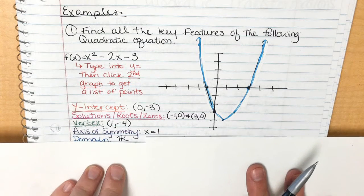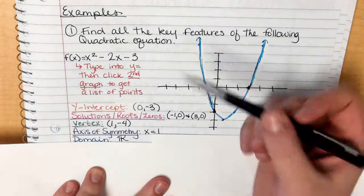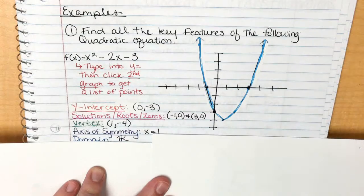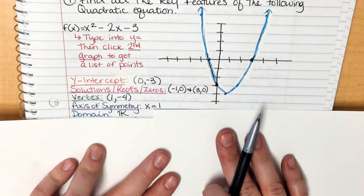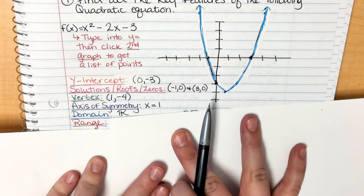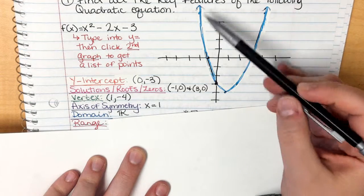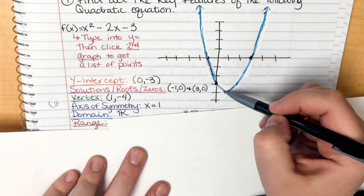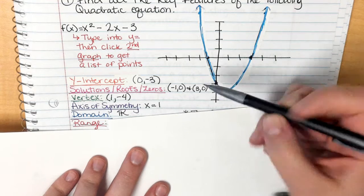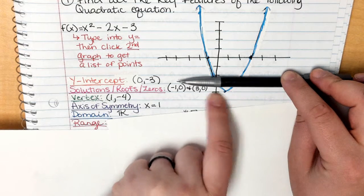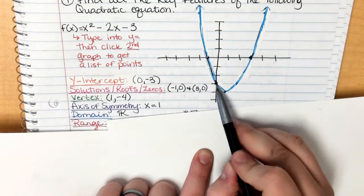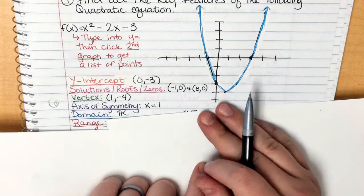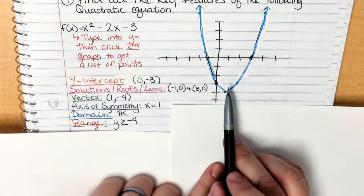The domain is all real numbers because the arrows go forever to the left and right. For the range, the graph goes up forever but stops going down at the vertex. The lowest y-value is −4, so the range is y ≥ −4.